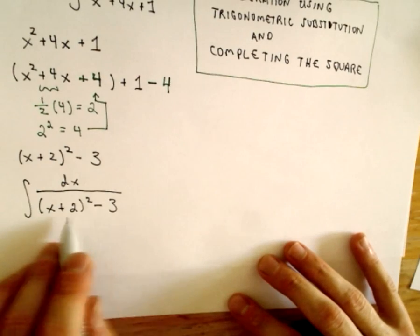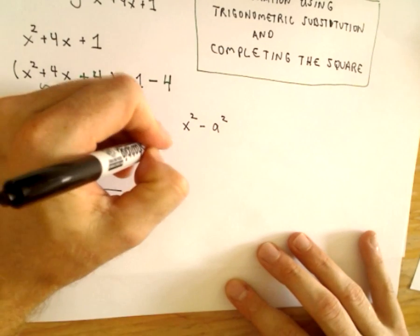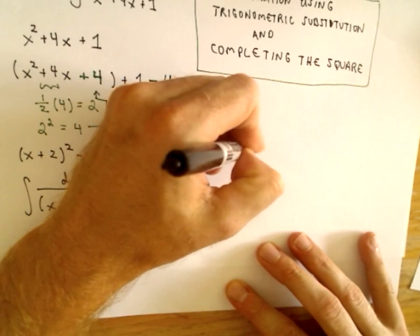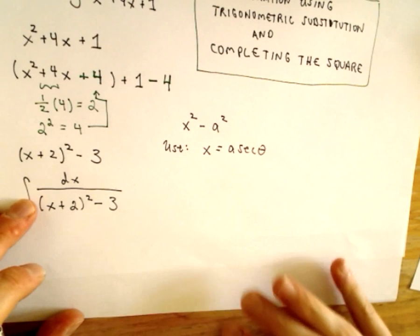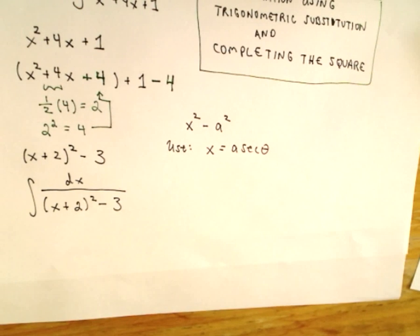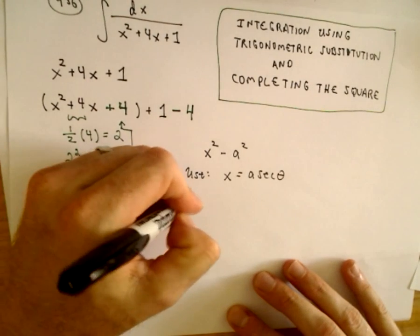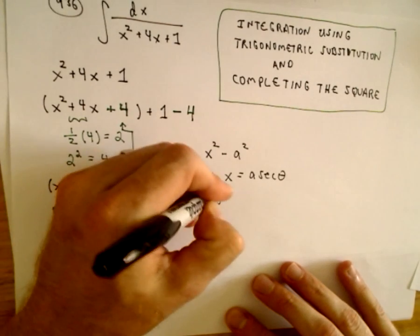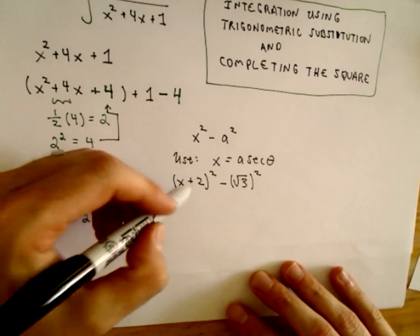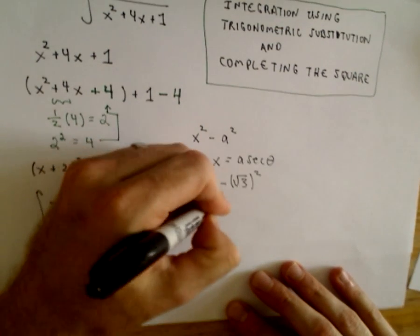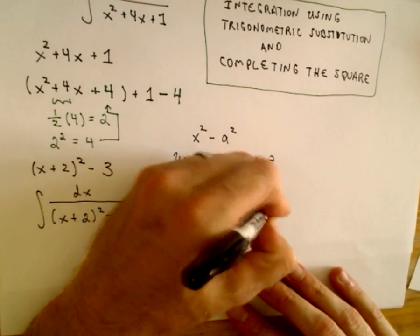Recall that if you have a quadratic expression of the form x squared minus a squared, when using trigonometric substitution, we use x equals a times secant theta. The point is that if you do have a square root, it gives you a perfect square and you get rid of the square root. In this case, we've got x plus 2 quantity squared minus the square root of 3 squared. So our a value is the square root of 3, and the substitution will be x plus 2 equals the square root of 3 times secant theta.